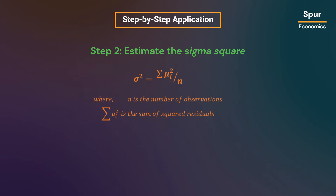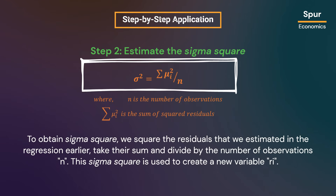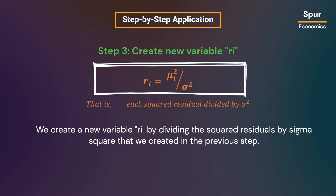In step 2, we have to estimate sigma square. To obtain sigma square, we square the residuals estimated in the regression, take their sum, and divide by the number of observations n. This sigma square is used to create a new variable ri. In step 3, we create the variable ri by dividing the squared residuals by the sigma square from the previous step.